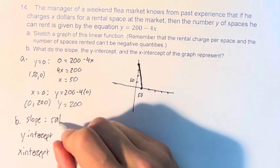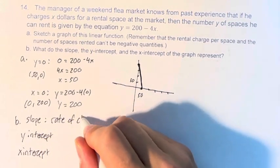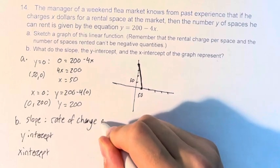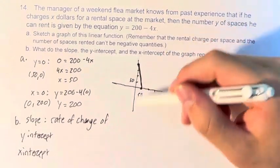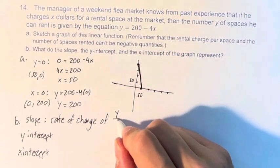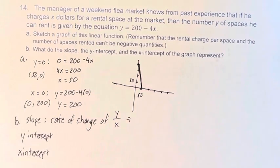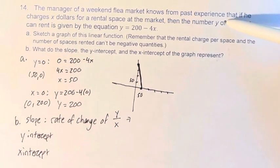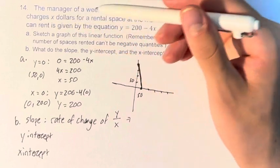So the slope is the rate of change of the dependent variable, y, over x. y is the number of spaces he can rent, x is the dollars charged.